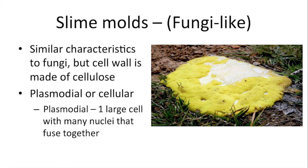The last group I want to highlight is the slime molds. These are the fungus-like protists, and you can see from the picture why we would think they were fungus-like because they have an appearance that looks like a fungus. They do have some similar characteristics, but also differences — for example, when we talk about fungi, their cell walls are made of chitin, whereas the cell wall of slime molds is made of cellulose. They also have a slightly different life cycle. The slime mold can exist in two different life cycle forms: one is plasmodial and the other is cellular. In the plasmodial cycle, it's essentially one large cell with many, many nuclei that have fused together.